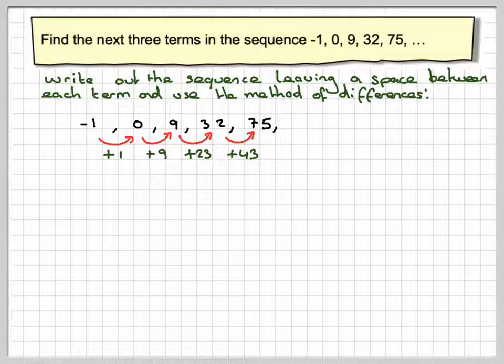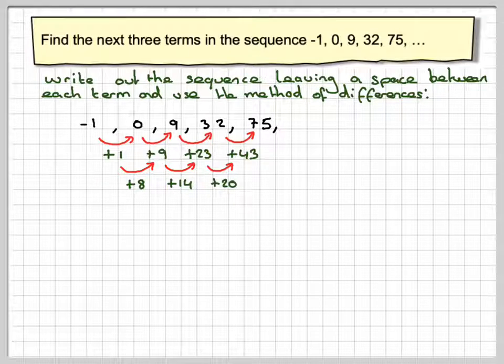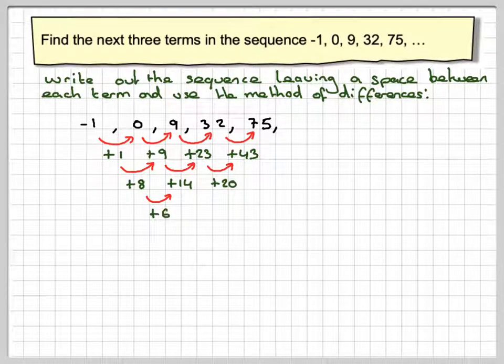Now we look at the differences between this one. So from here we need to add 8, from here we're going to need to add 14, and from here we're going to add 20. And now we look at the differences of these. We're going to add 6 and we're going to add 6 here.